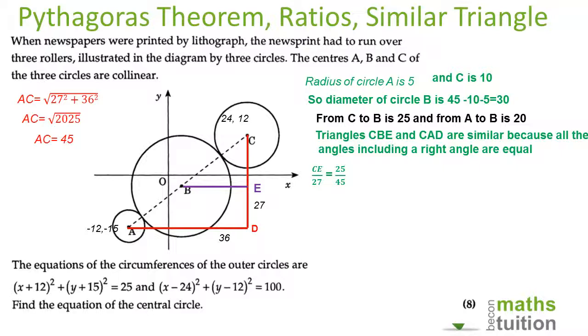Now that being the case, we can say that CE divided by 27, which is the equivalent side, is equal to 25, which is this one here, divided by 45, which is the whole length of AC. This gives us the value of CE as 15, because when you cancel 25 and 45 by 5 you get 5 over 9, divide 27 by 9 you get 3, so 3 times 5 is 15.